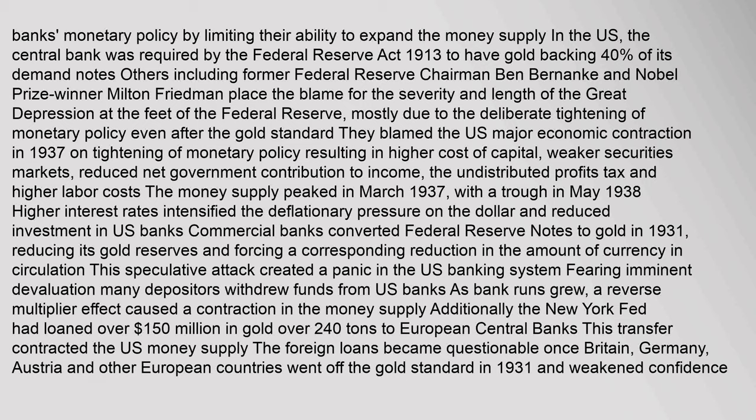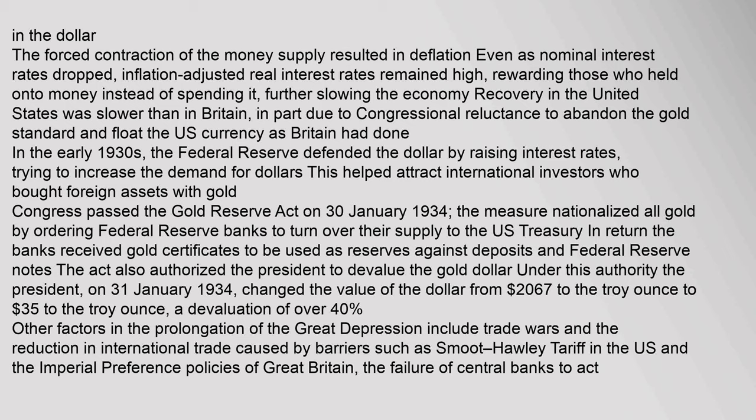Higher interest rates intensified deflationary pressure on the dollar and reduced investment in U.S. banks. Commercial banks converted Federal Reserve notes to gold in 1931, reducing gold reserves and forcing a corresponding reduction in the amount of currency in circulation. This speculative attack created a panic in the U.S. banking system; fearing imminent devaluation, many depositors withdrew funds as bank runs grew, creating a reverse multiplier effect that contracted the money supply. Additionally, the New York Fed had loaned over $150 million in gold to European central banks. The forced contraction of the money supply resulted in deflation; even as nominal interest rates dropped, inflation-adjusted real interest rates remained high, rewarding those who held onto money instead of spending it.